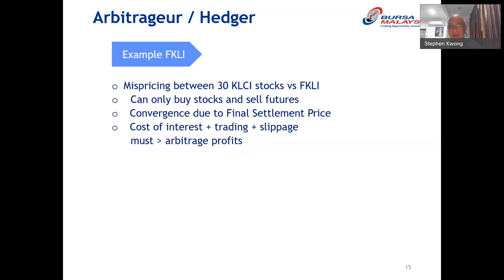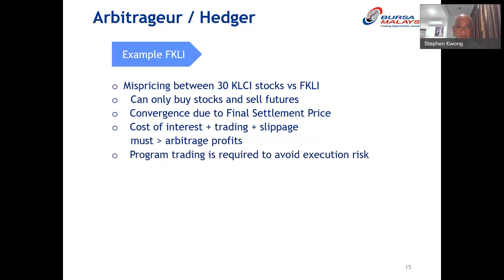When you do arbitrage, you must be aware that the mispricing difference must be more than the total costs involved — going back to the car example, the 30,000 profit must exceed petrol and insurance costs. When arbitrageurs execute, they buy one instrument and sell the other simultaneously, and the execution must be very fast. In practice, very few individual traders can execute it manually — most of the time program trading is required.